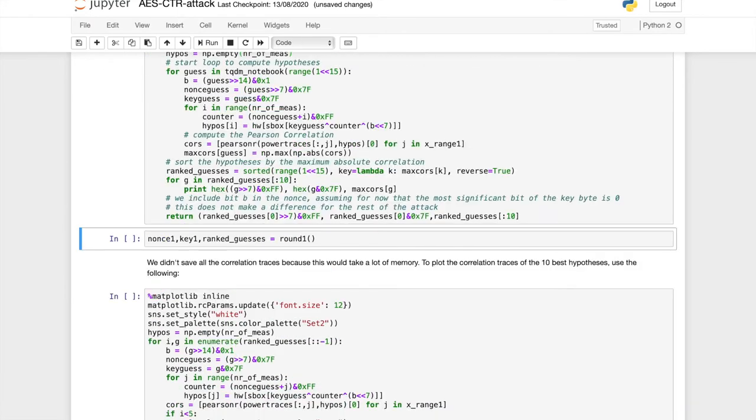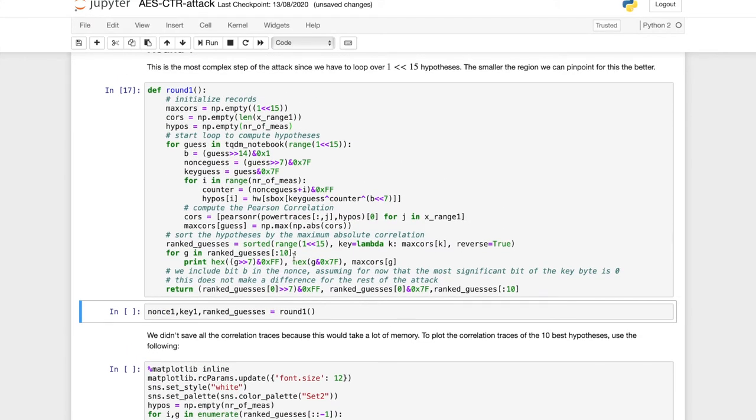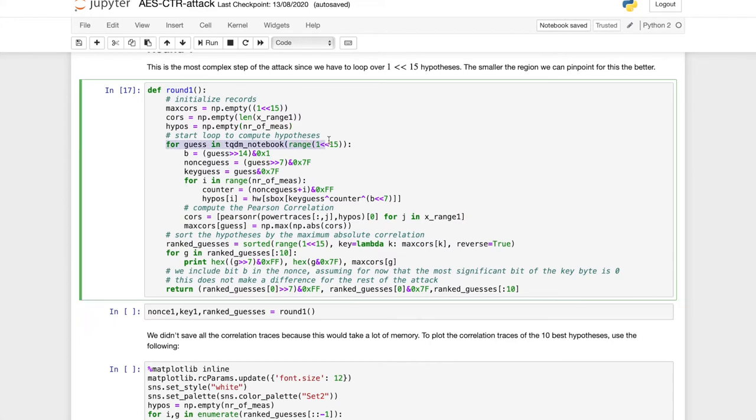And here we have the code for the first part of the attack. And like I said, we will loop over 2 to the power 15 guesses. And then for each guess and for each trace, we will compute a hypothesis. Which is the value after the s-box in the first round for byte 15. And then we will compute the Pearson correlation between the hypothesis and the traces. And for each guess we will store the maximum correlation that we find. And then we can use that to rank the guesses and choose which one wins.